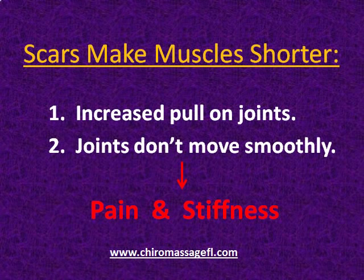Whether the scar is on the surface of the muscle or deep in the muscle, the effect is the same. Scars make muscles shorter, and this creates two problems. Short muscles with scars pull harder on joints than normal muscles, and this stops the joint from moving smoothly, which causes you pain and stiffness. If that sounds familiar, it's because both trigger points and scar tissue make muscles shorter. For example, if you have scar tissue in a muscle of your hip, as this muscle becomes shorter, it pulls on the hip joint.